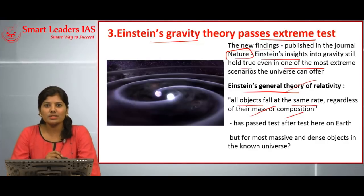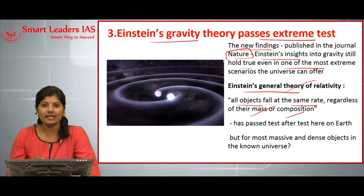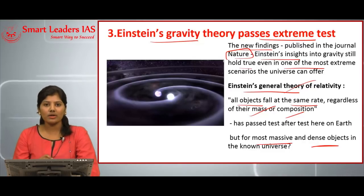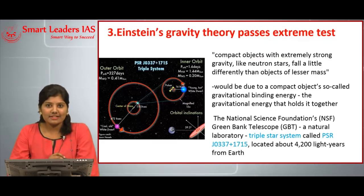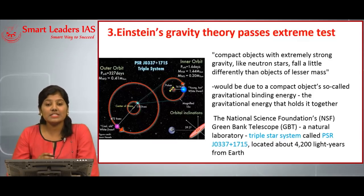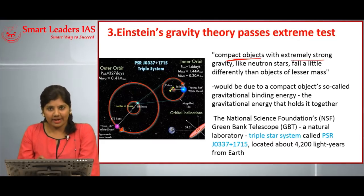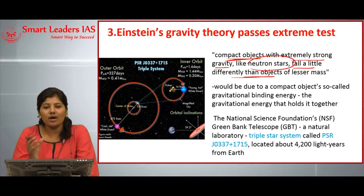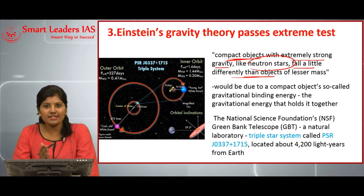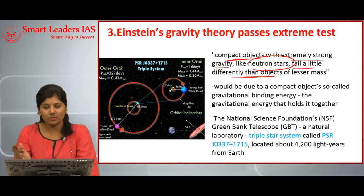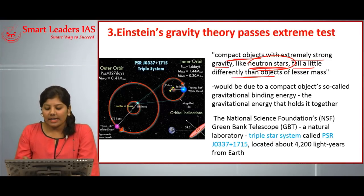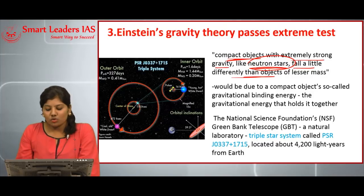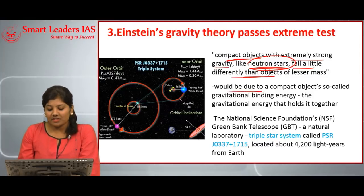This theory has been tested in all scenarios from small objects to massive ones like planets. But the question was whether it holds true for the most massive and dense objects, like neutron stars — and they proved it still holds true. An alternative theory states that compact objects with extremely strong gravity, like neutron stars, fall a little differently than objects of lesser mass. If you check Einstein's theory within planets it holds true, but for neutron stars the alternative theory claimed they would fall differently.